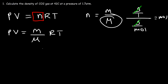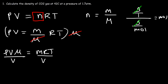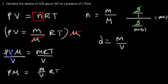Now don't confuse this with molarity. You can write it as MW for molecular weight. Now I'm going to multiply both sides by the molar mass, so I'm going to have PV times the molar mass is equal to MRT. Now let's divide both sides by the volume. So on the left, pressure times the molar mass is equal to M over V times RT. Now density is known as mass divided by the volume, so I can replace M over V with the density.